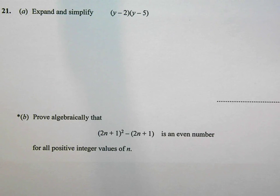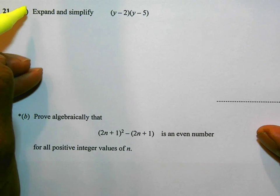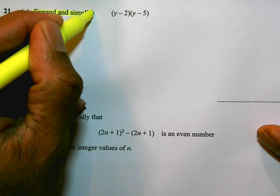This is question number 21 on the June 2014 calculator paper. So question 21 says expand and simplify, and we have a pair of brackets here.